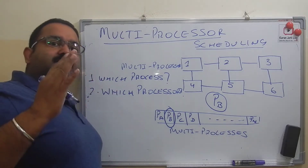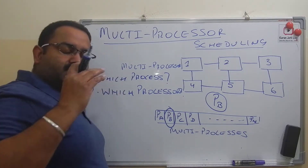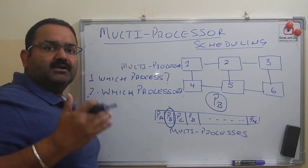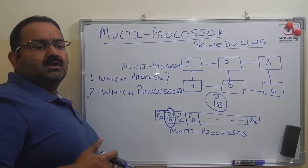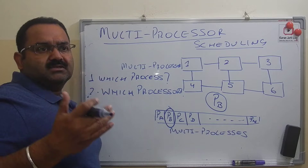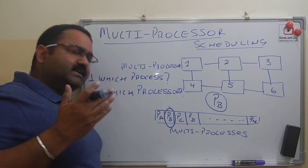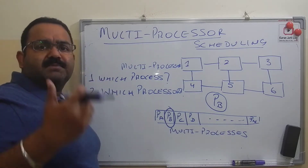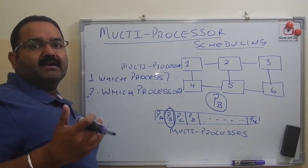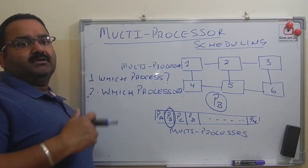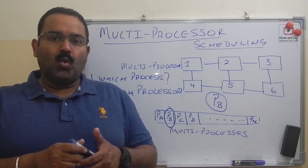For multi-processor scheduling we have different scheduling algorithms. The first one is time sharing, then we have space sharing, and then we have gang scheduling. I'll discuss all of them one by one.